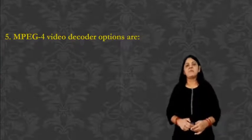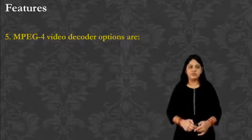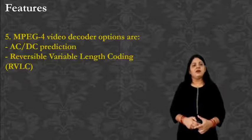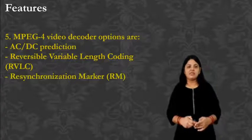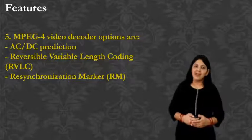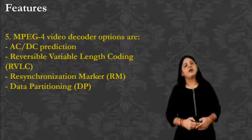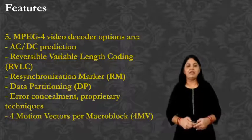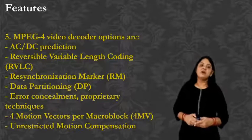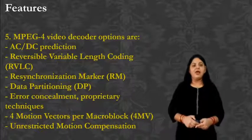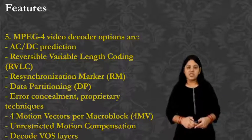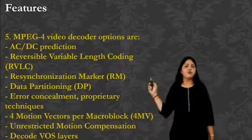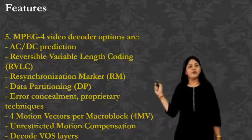The next feature is the MPEG-4 video decoder options: ACDC prediction, reversible variable length coding (RVLC), re-synchronization marker (RM), data partitioning, error context element, proprietary technique, and motion vectors for macro block (4MV) and unrestricted motion compensation, D-O-D-O-S layers. These are the things required for the MPEG-4 video decoder options.